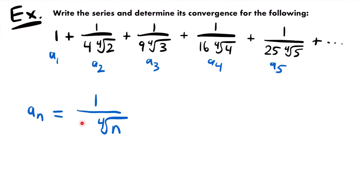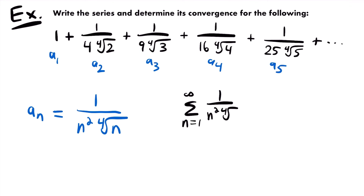What about the value being multiplied by that 4th root? When n equals 2 it is 4, when n equals 3 it is 9, when n equals 4 it is 16, and when n equals 5 it is 25 — each is n squared. Checking for n equals 1: 1 squared times the 4th root of 1 is 1 times 1 equals 1, and 1 divided by 1 is 1 — that checks out. So our nth term is 1 divided by n squared times the 4th root of n, and the series is the sum from n equals 1 to infinity of 1 divided by n squared times the 4th root of n.